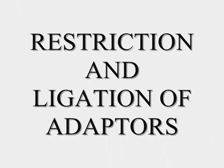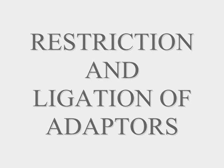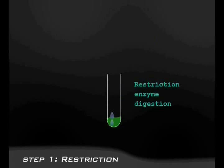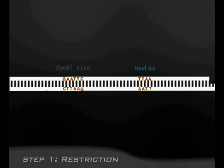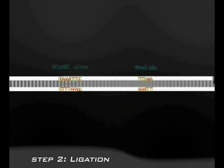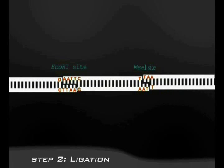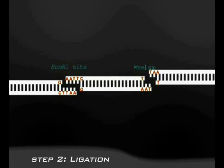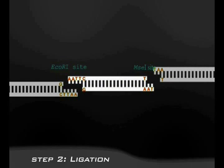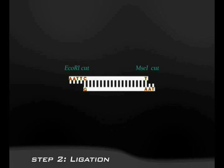Next comes the restriction and ligation of adapters. Restriction enzyme is added to the cDNA mixture. The two enzymes are EcoRI and MseI, which cut at their restriction sites. EcoRI is a rare 6-base cutter and MseI is a frequent 4-base cutter. The ligation of restriction fragments using EcoRI adapter and MseI adapter then takes place.